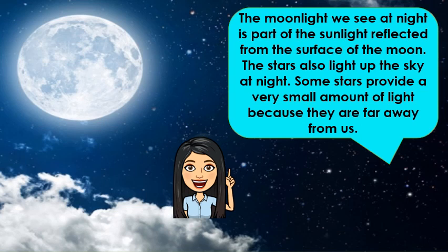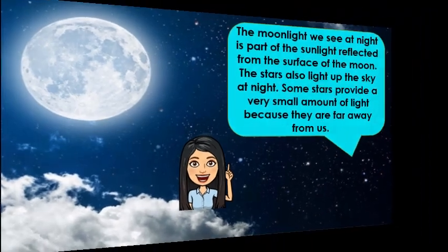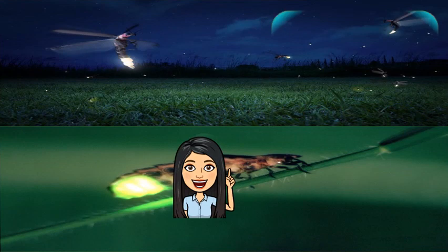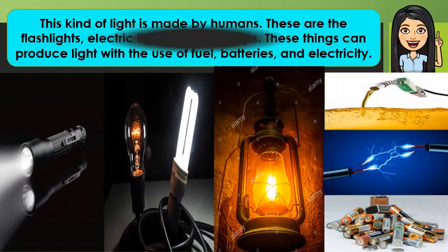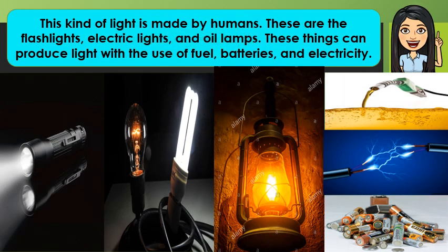The stars also light up the sky at night. Some stars provide a very small amount of light because they are far away from us. Have you seen fireflies and glowworms? Fireflies and glowworms create their own light. Light may also come from artificial sources. This kind of light is made by humans. These are the flashlights, electric lights, and oil lamps. These things can produce light with the use of fuel, batteries, and electricity.